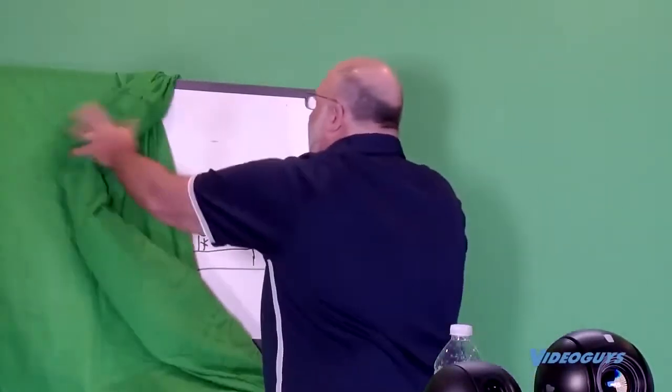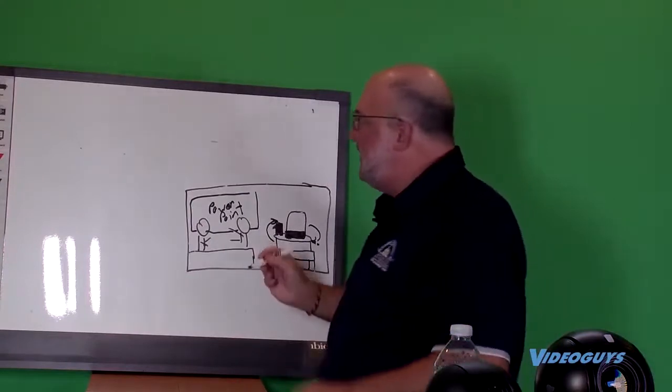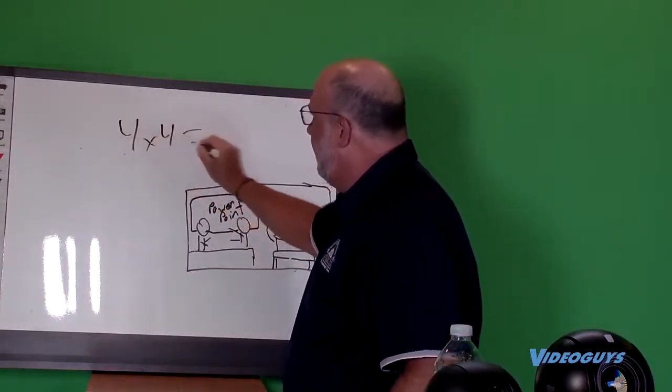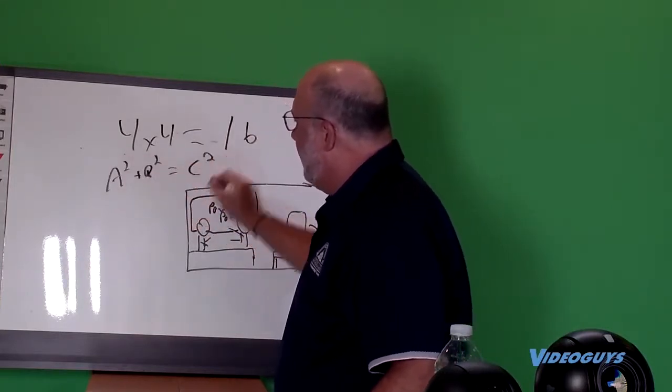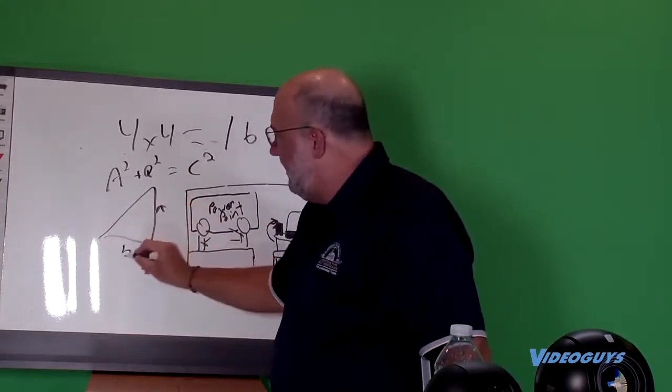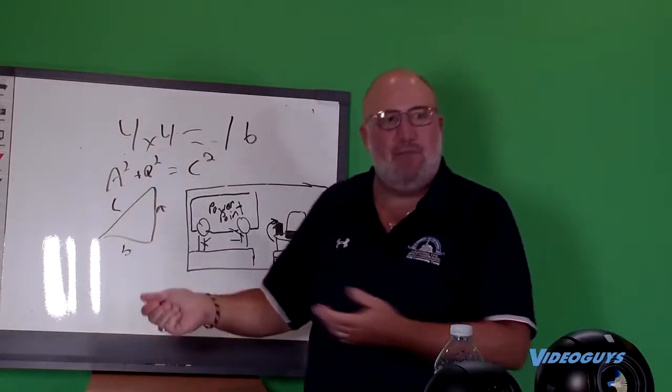We have a whiteboard right here for this demonstration. Now I'm here just like a normal teacher — 4 times 4 equals 16, A squared plus B squared equals C squared. We can go over anything we want to teach, and it's more like the environment you're used to as a teacher with your board. Then you can always come back to another preset, or go back to the Chromebook talking-head view.